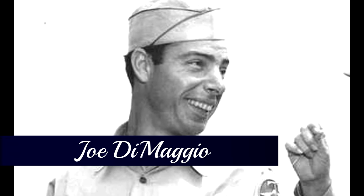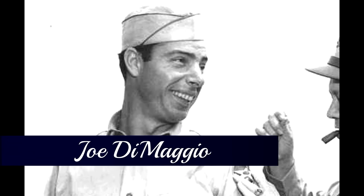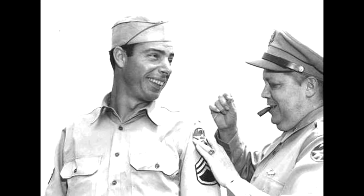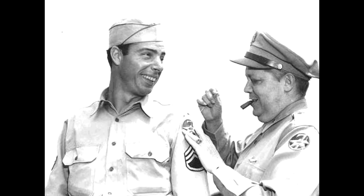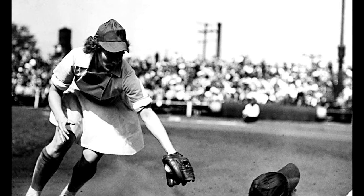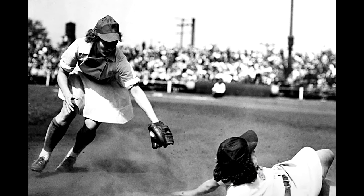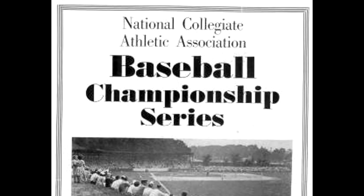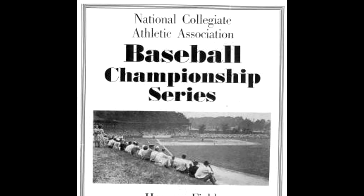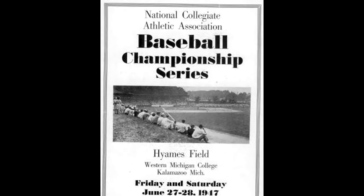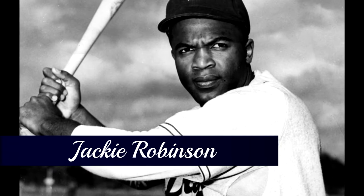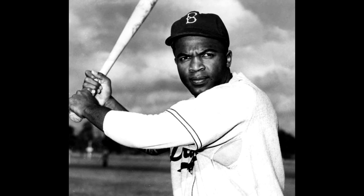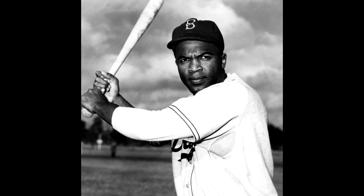The 1940s saw several changes as well. Due to World War II, several prominent players were recruited to fight in the war, often becoming national heroes in the process. A new professional league with female players was established to help keep the game popular during the war. After the war in 1947, the College World Series would start under the NCAA. Also in 1947, the first African American player, Jackie Robinson, would join the Brooklyn Dodgers, a National League team, breaking the long-standing color barrier.